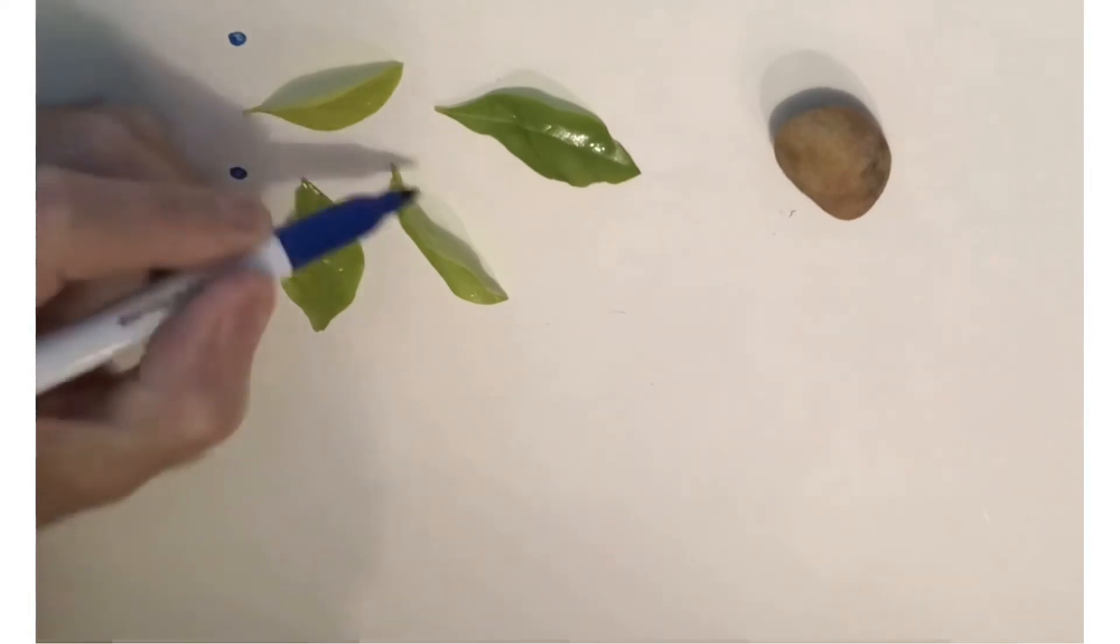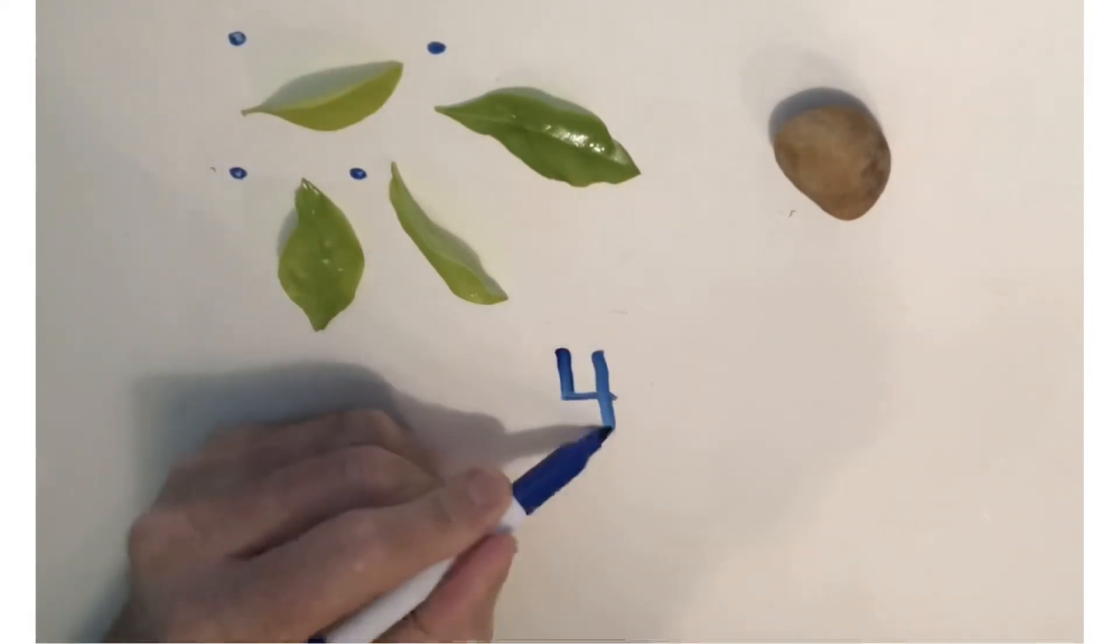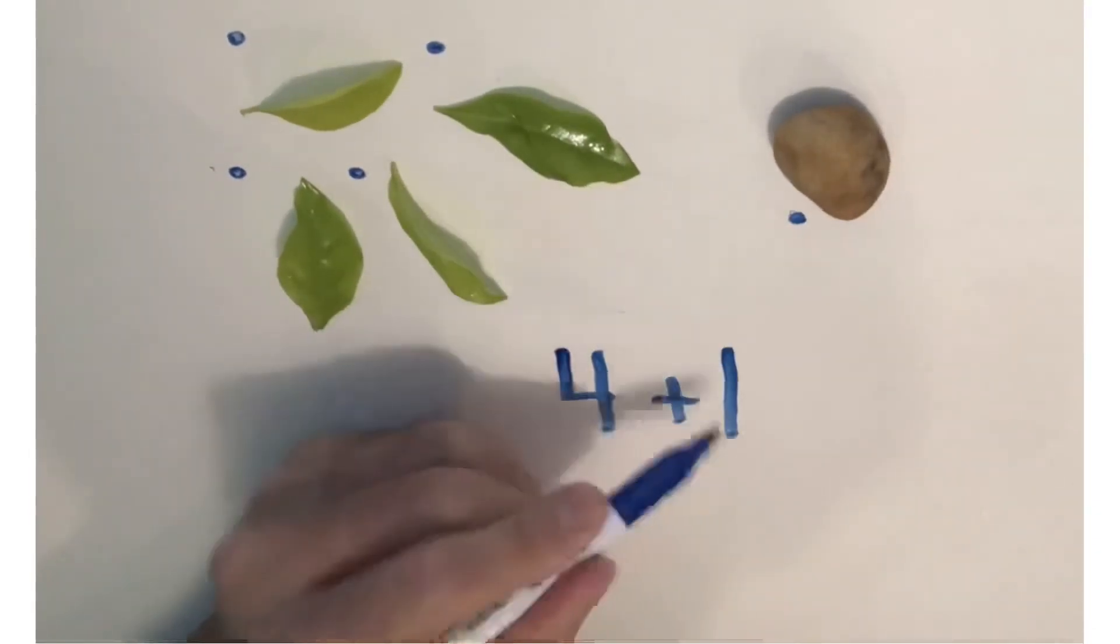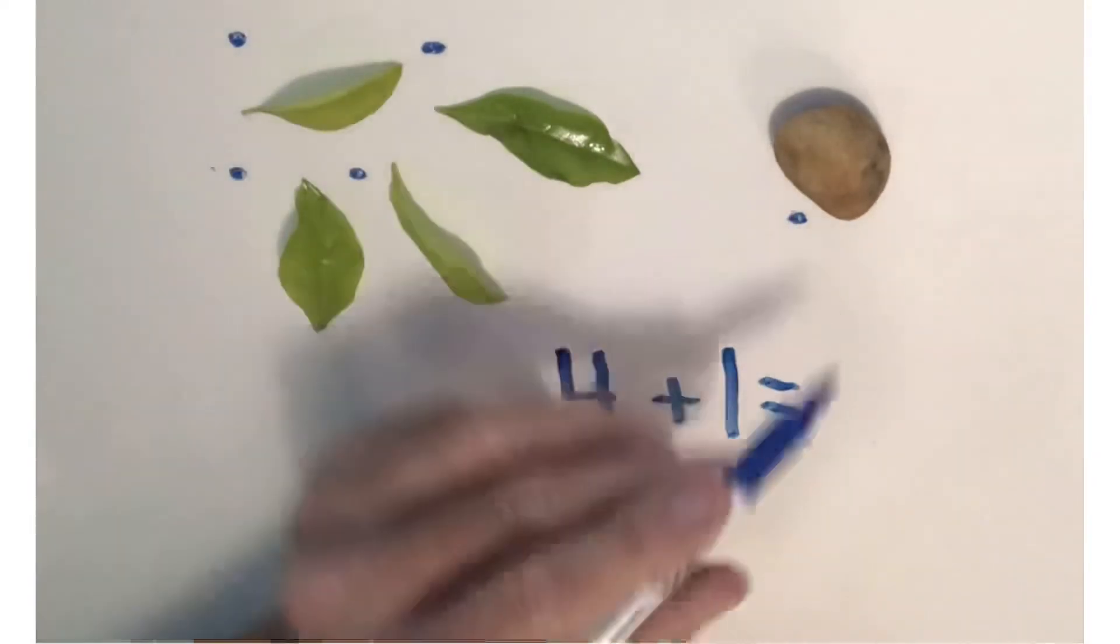One, two, three, four leaves plus one rock equals one, two, three, four, five.